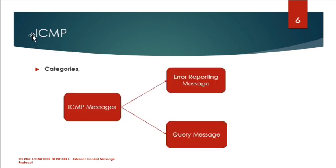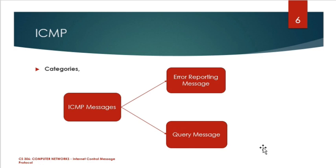We can categorize ICMP messages into two types: error reporting messages and query messages. These are the two main categories of ICMP messages.